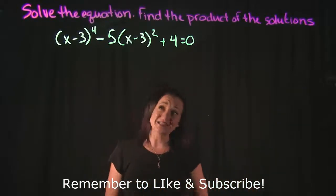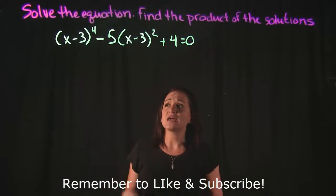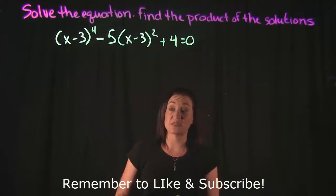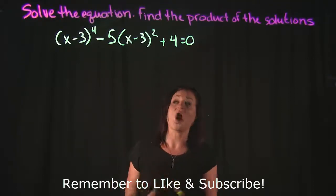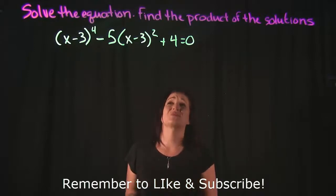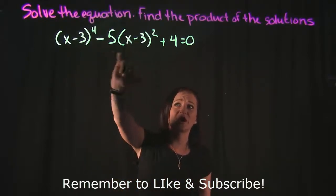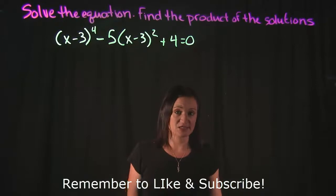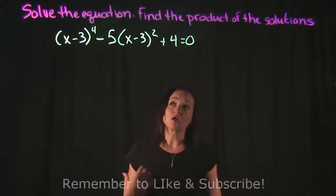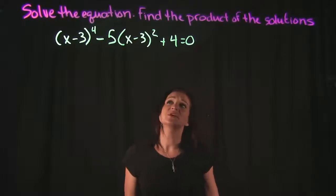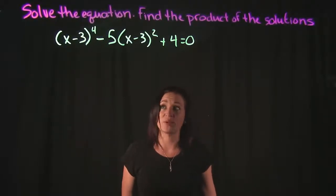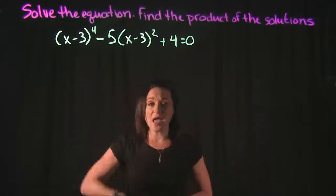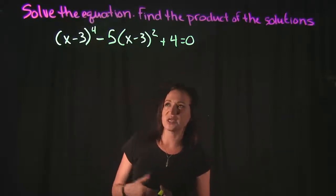We're trying to solve this equation for x, and there's a lot going on here. Expanding x minus 3 to the fourth power means multiplying x minus 3 four times, which creates a lot of terms. Combining that with the rest of the expression would be a big mess. So to make this problem easier, I'm going to use a u-substitution, and then undo it at the end.